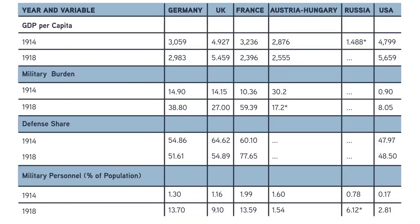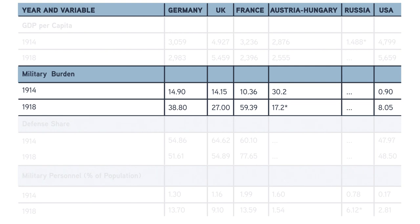Why did the First World War have such a huge impact? One answer can be found in the staggering cost of the war. We can see this cost in data like this chart, produced mainly by Finnish historian Jari Elranta. The chart shows changes in economic and demographic data in some of the major combatant countries, covering the time between the beginning of the war in 1914 and its end in 1918. Two important trends stand out. The first is the military burden — the percentage of a nation's economy spent on the military. It is very difficult to sustain this percentage above 15 percent. In the United States today, the military burden is about 3 percent. But by the end of the First World War, it was incredibly high in all of the countries for which we have data. In Germany, it was almost 40 percent.